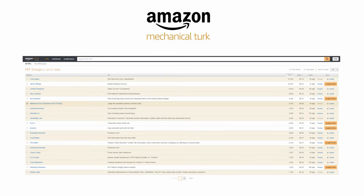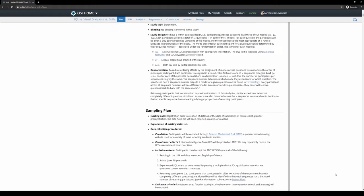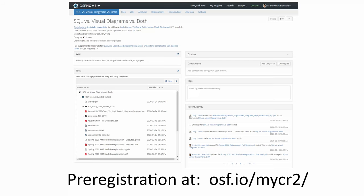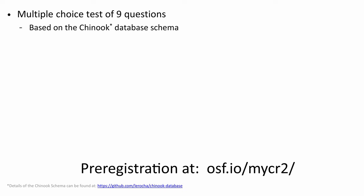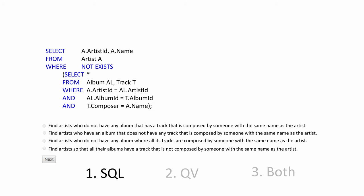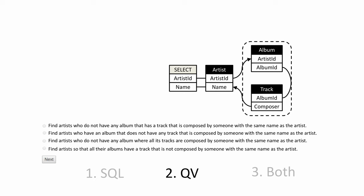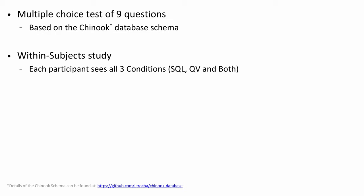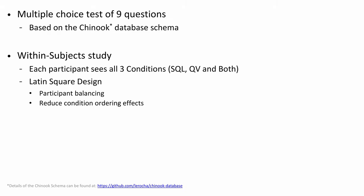To evaluate the effectiveness of our diagrams, we conducted a user study on Amazon Mechanical Turk, a widely used crowdsourcing platform. Our hypothesis, study questions, experimental design, and analysis code were all pre-registered before we began collecting data, and our complete materials are available on OSF to enable reproducibility and replicability. The study was conducted as an online test with nine questions, asking participants to choose the best interpretation of a displayed query from four multiple-choice options, based on the widely used Chinook database schema. Each question was presented in one of three conditions: SQL only, QueryVis diagram only, or both. The study used a within-subject design with a Latin square design to minimize condition ordering biases.